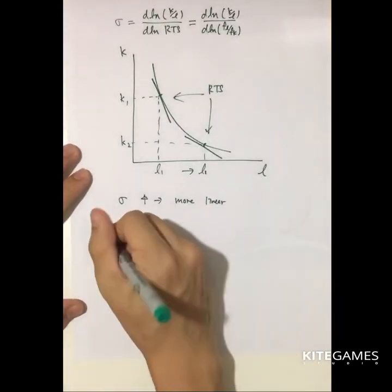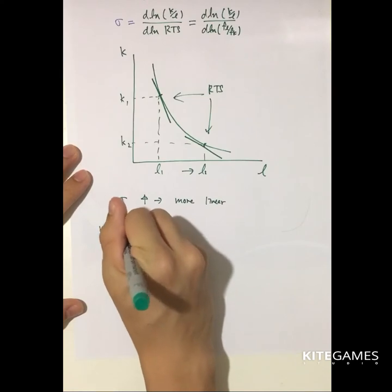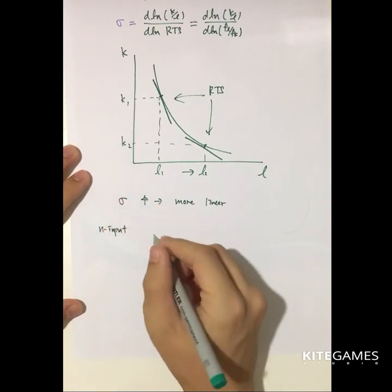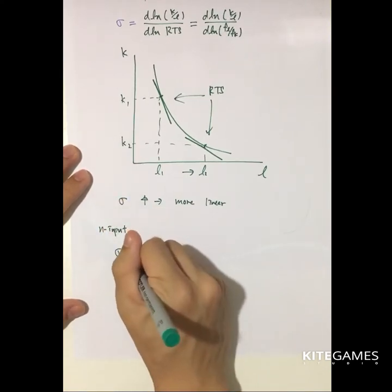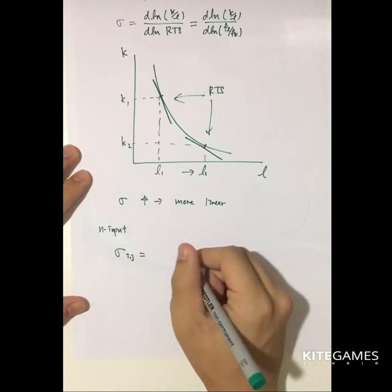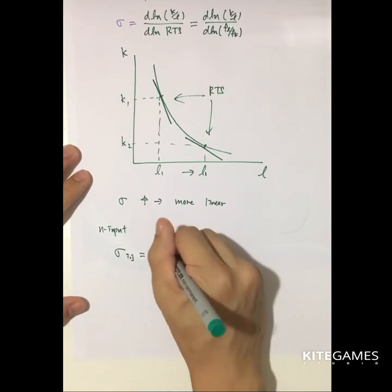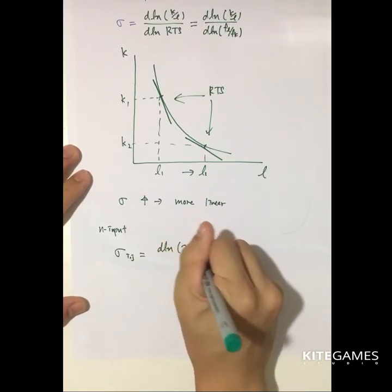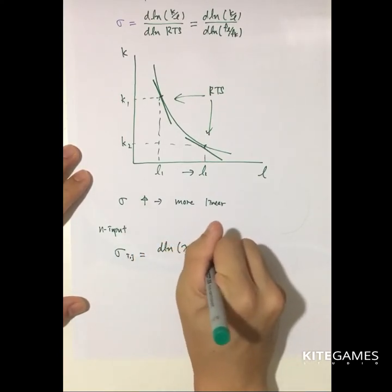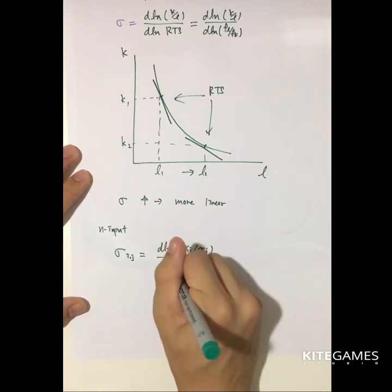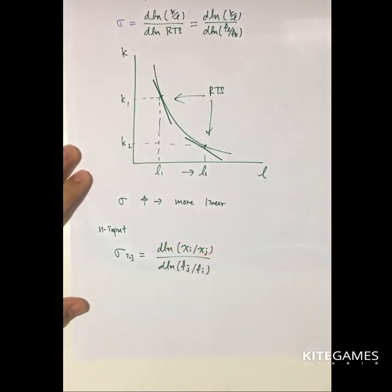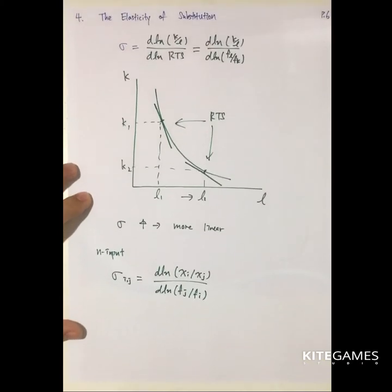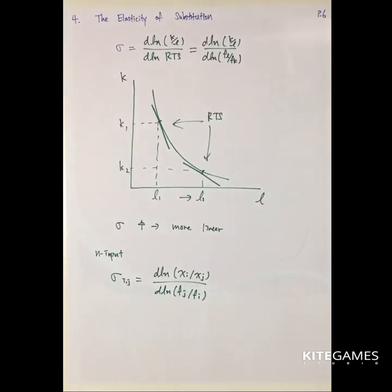In the n-input case, the elasticity of substitution between input i and input j is d log(x_i / x_j) divided by d log(f_j / f_i). This is just a similar manner to the two-good case.